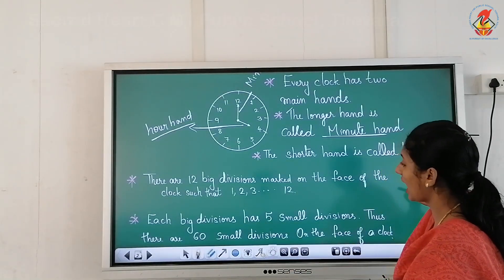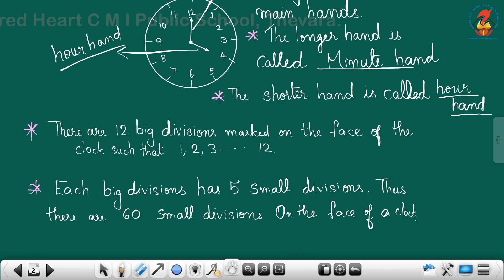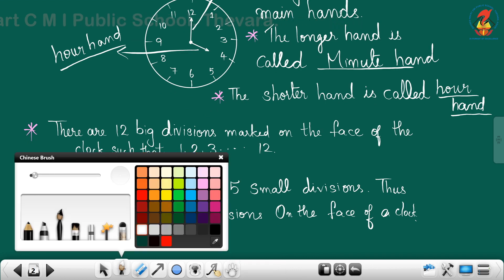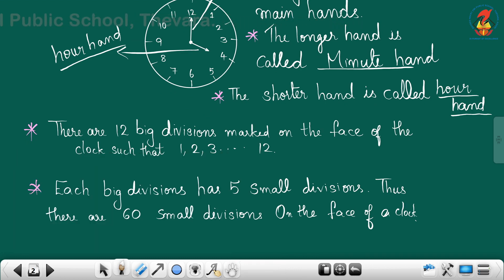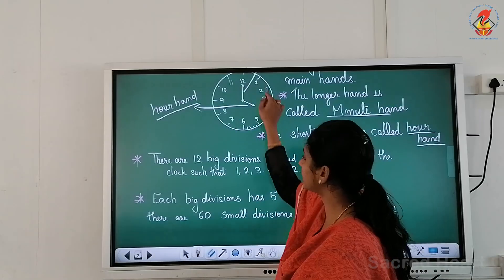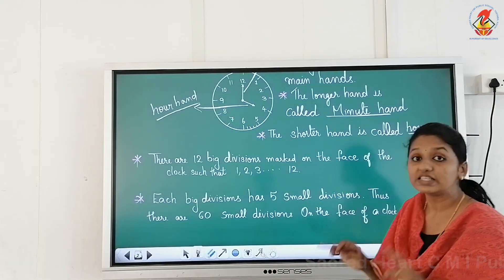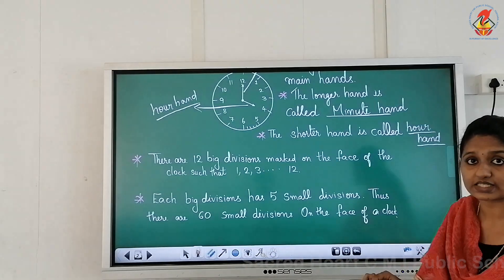Each big division has five small divisions. So in between twelve and one, there are five small divisions. Thus, there are sixty small divisions on the face of the clock. For example, between five and six there are five small divisions, so totally on a clock, sixty small divisions.